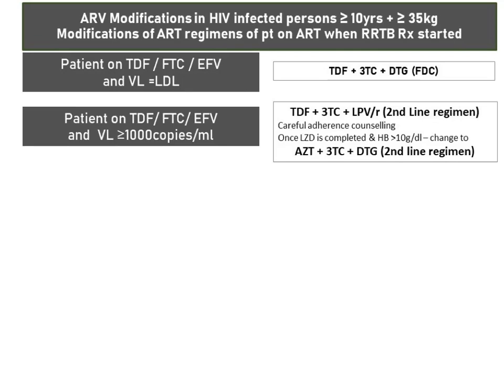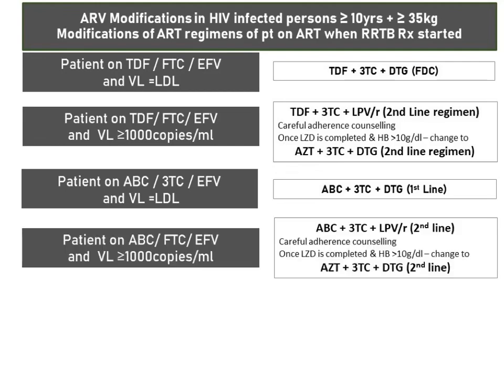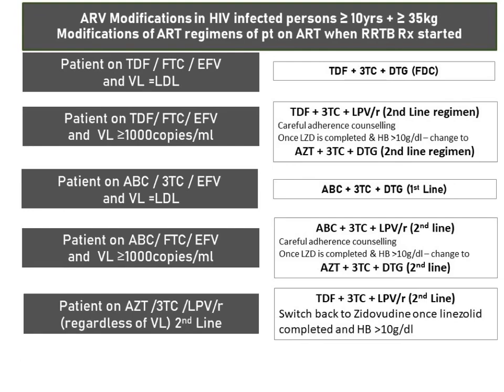The same principles apply for adults on an abacavir-based regimen: if the viral load is suppressed, they can be changed to abacavir, 3TC and dolutegravir; if not, use a temporary regimen of abacavir, 3TC and lopinavir-ritonavir until they can be switched to the new second-line. For patients already on second-line, similarly to those who defaulted second-line, we will temporarily switch the AZT to tenofovir until linezolid is completed and the Hb is over 10, then switch back to the AZT-based regimen. Remember, dolutegravir cannot be used in these patients.